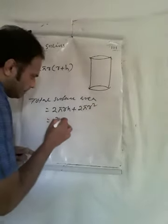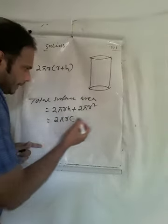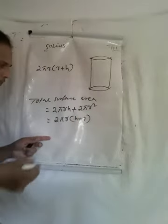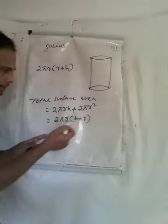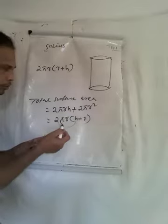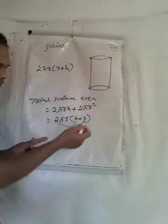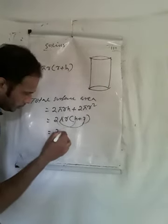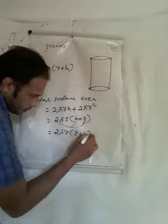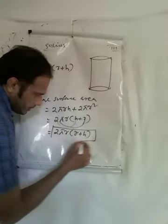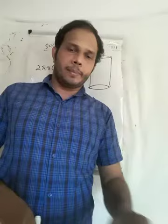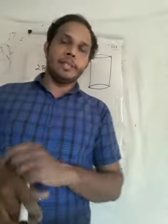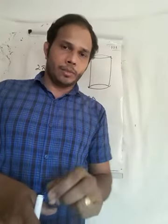So we have 2πr² + 2πrh, which can be factored as 2πr(r + h). Therefore, the total surface area of a cylinder equals 2πr(r + h). That is the concept of the area of the cylinder.